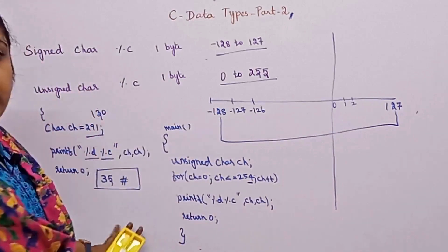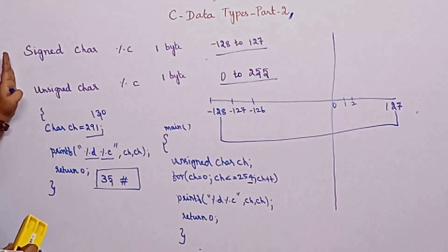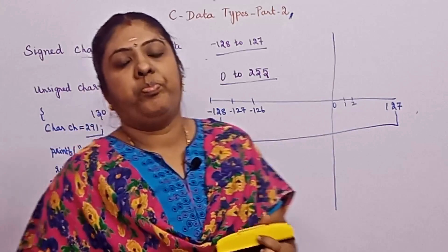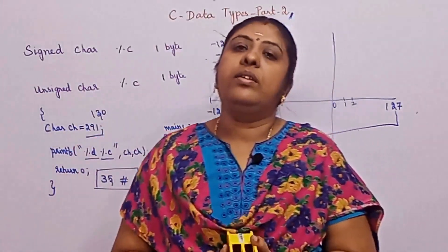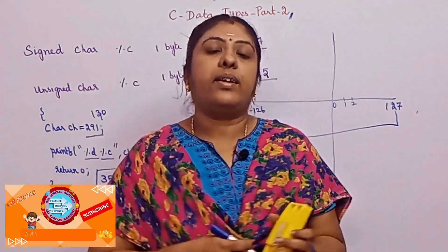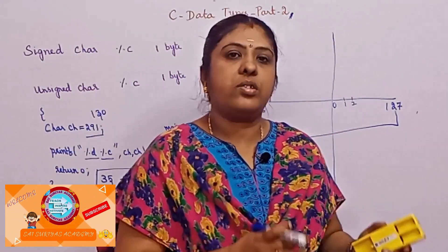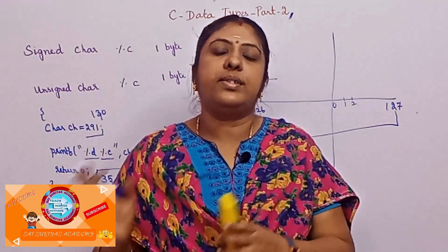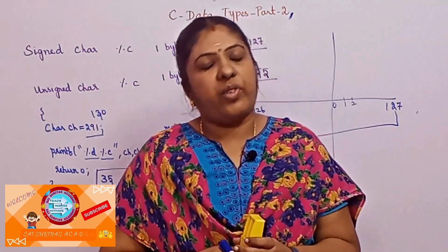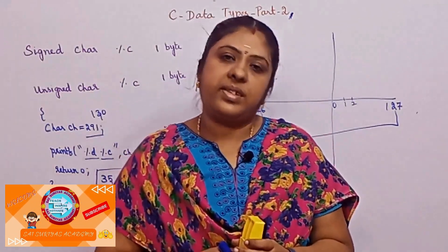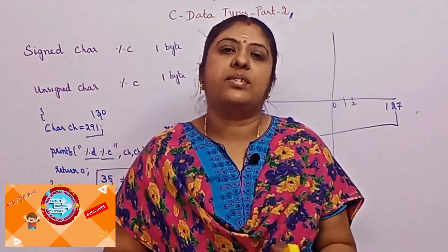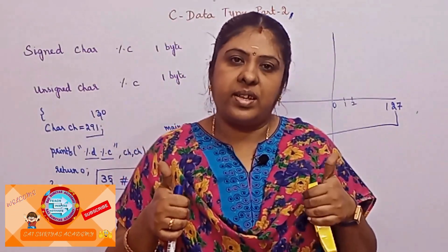Now we understand signed character and unsigned character through this program. Hope you are very clear about the integer data types, float data types, signed character and unsigned character. The last one, void, returns a null value — that's all about the data types. If you find this video really useful, share this video with your friends and make a small appreciation comment. Keep supporting SciSurious Academy. Thank you.